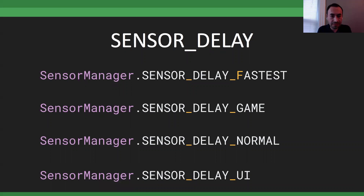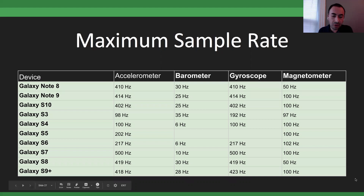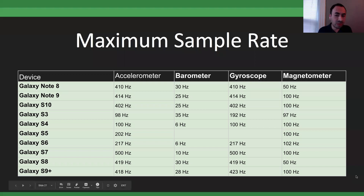This list of maximum sample rates is from about a year ago. The accelerometer usually maxes out at 400–500 Hz on unusual examples. The barometer is a slower sensor. The gyroscope and accelerometer are often housed in the same unit — the IMU — so they have essentially the same frequency. The magnetometer is usually 50–100 Hz.